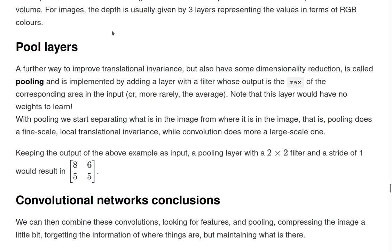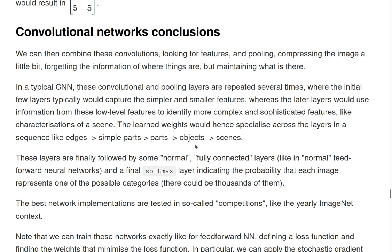When you take the maximum over a filter, you're doing something like: it doesn't really matter if it is here or here. It doesn't matter if your line is a little bit blurry. The importance is that somewhere here there is the element that we are looking for. It applies this translational invariance at a smaller scale.